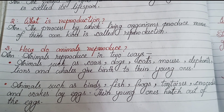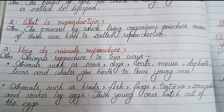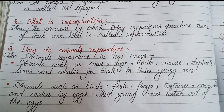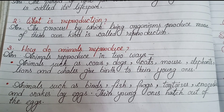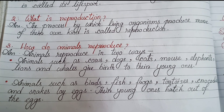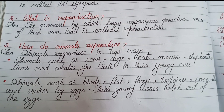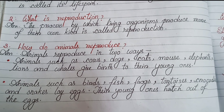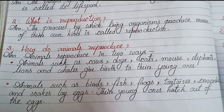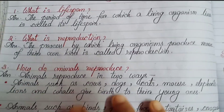Question three: How do animals reproduce? Animals reproduce in two ways. Animals such as cows, dogs, cats, mice, elephants, lions, and whales give birth to their young ones. Animals such as birds, fish, frogs, tortoises, crocodiles, and snakes lay eggs — their young ones hatch out of the eggs.